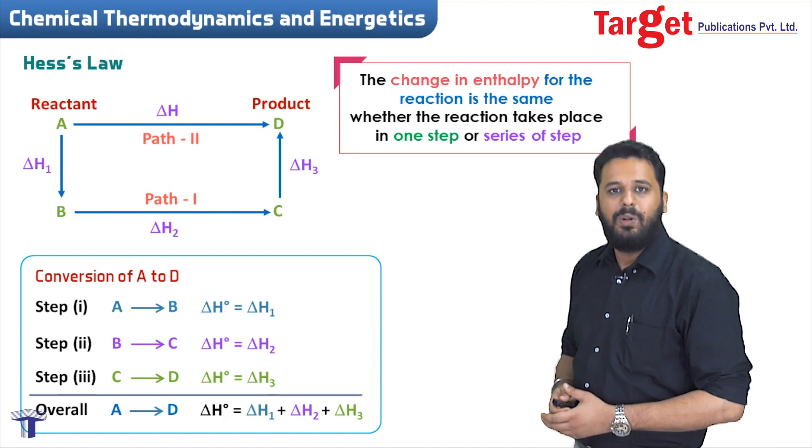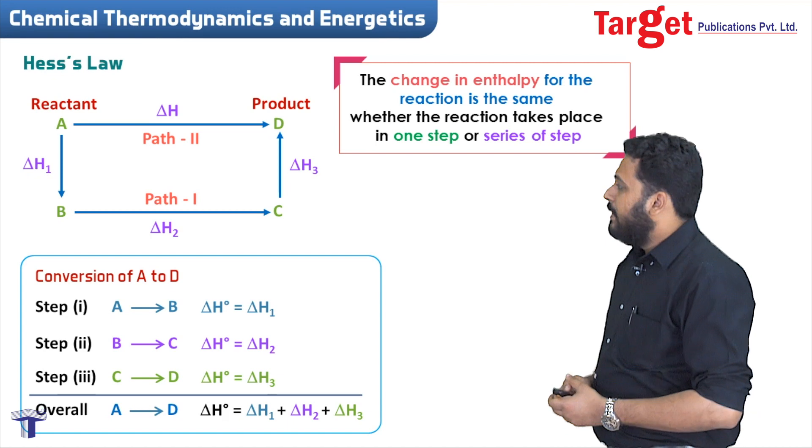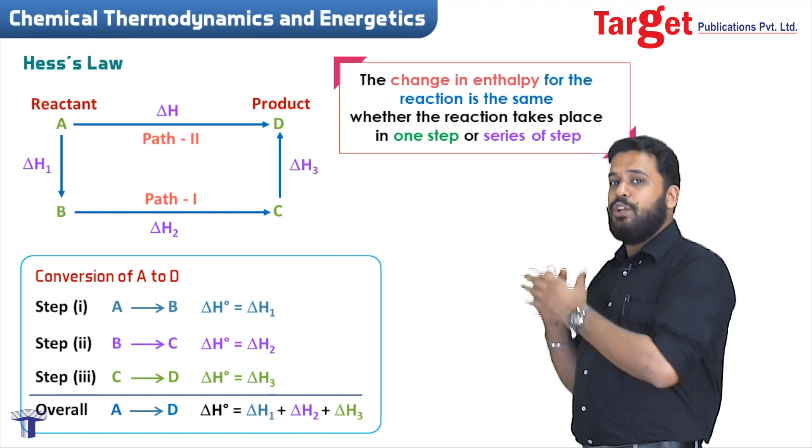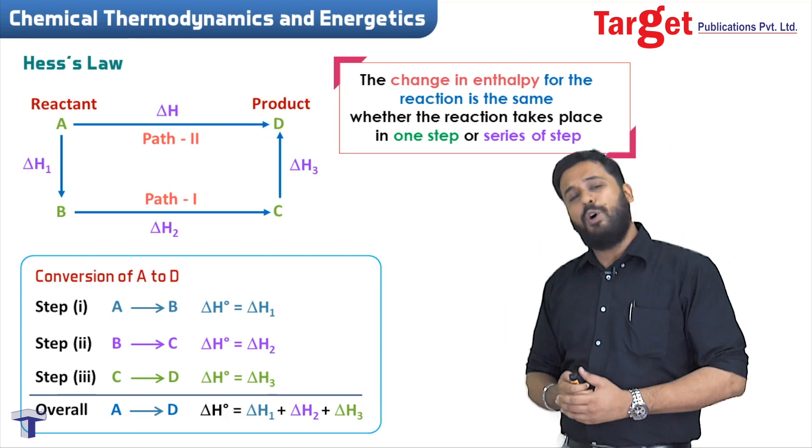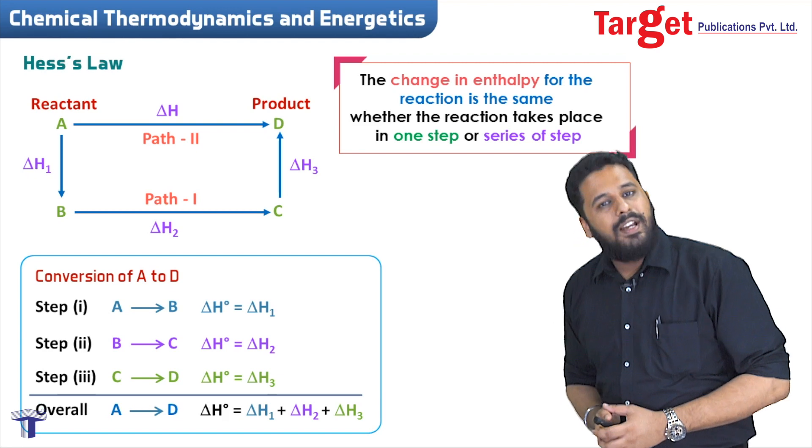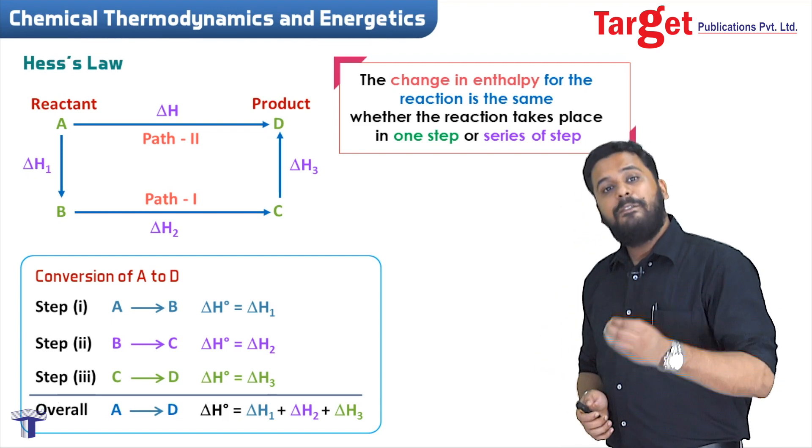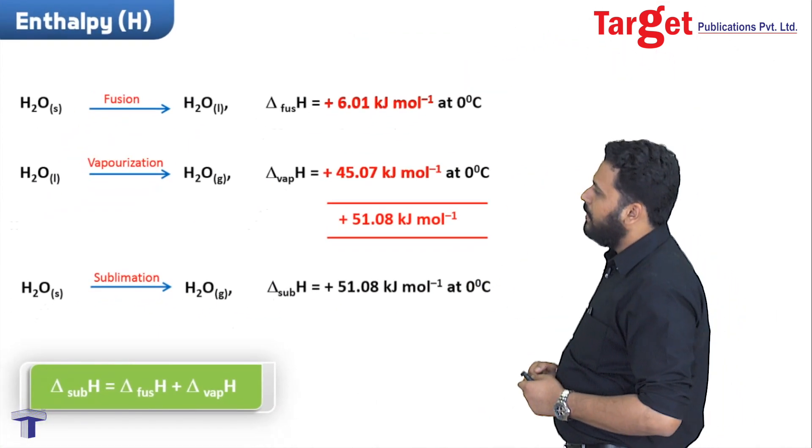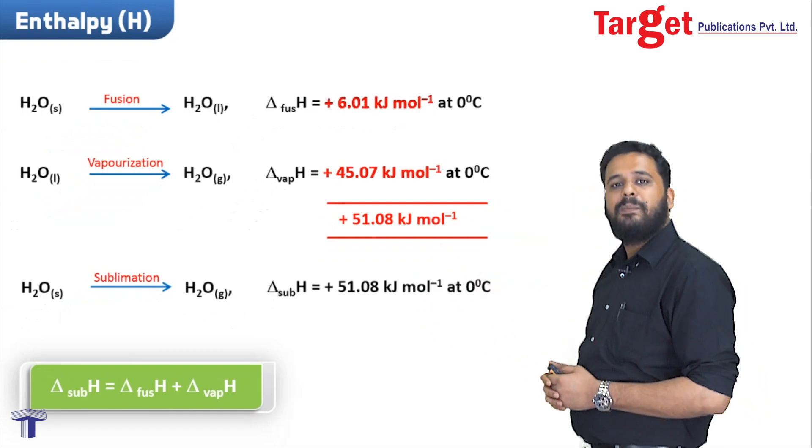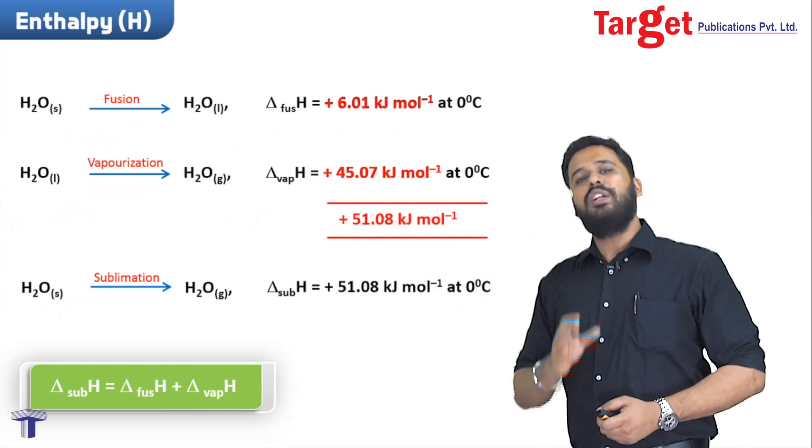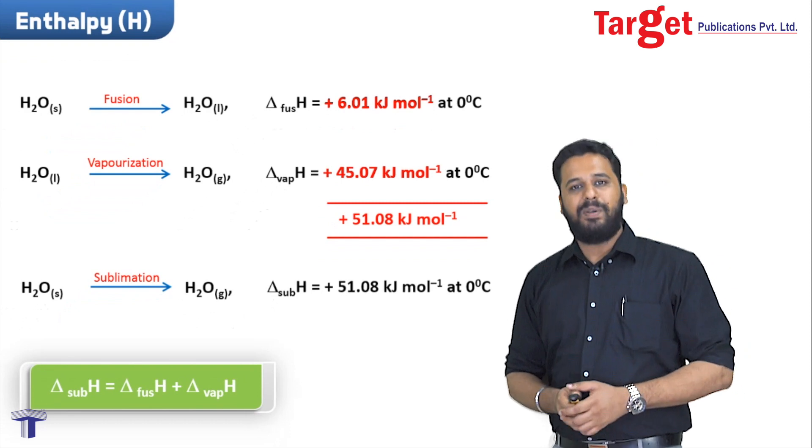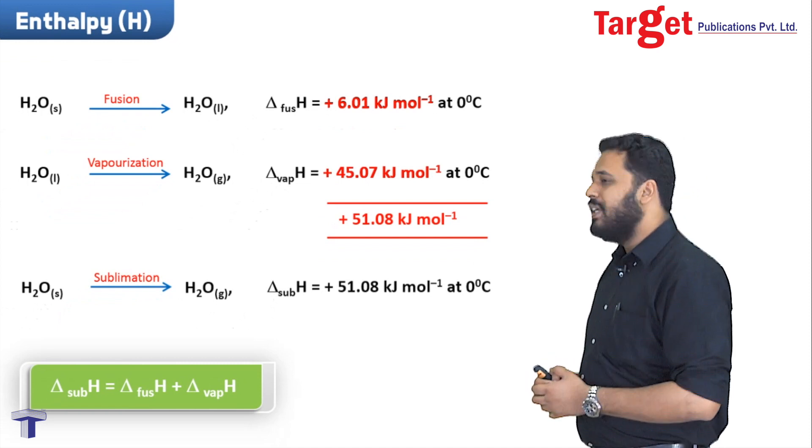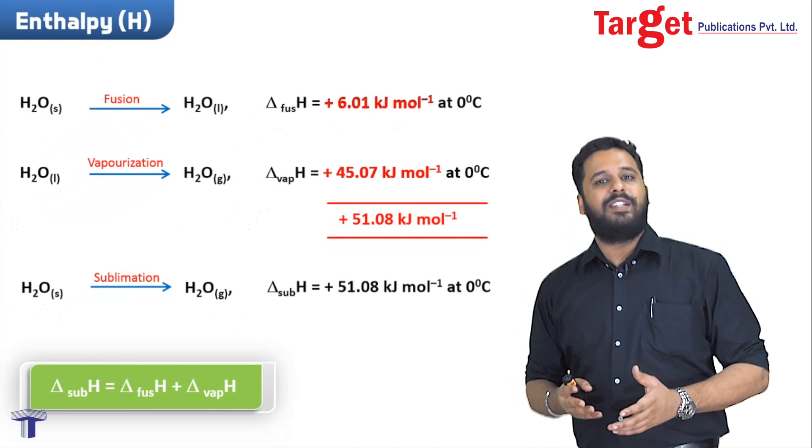One similar concept we studied in a previous video on enthalpy of physical changes was phase transitions. There we saw that enthalpy of sublimation equals enthalpy of fusion plus enthalpy of vaporization. This was also a type of Hess's law of constant heat summation.